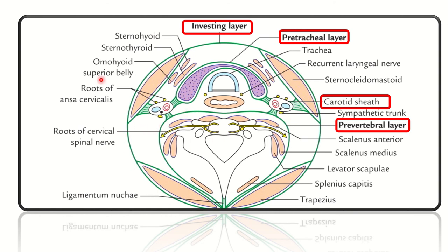Here we can see the thyroid gland. The green structures represent the different layers of deep fascia in the neck, each encircling different parts of the neck. First is the investing layer of deep fascia, which encircles the whole of the neck muscles. Then the pretracheal fascia, which lies anterior and posterior to the thyroid gland and encircles the whole thyroid gland.